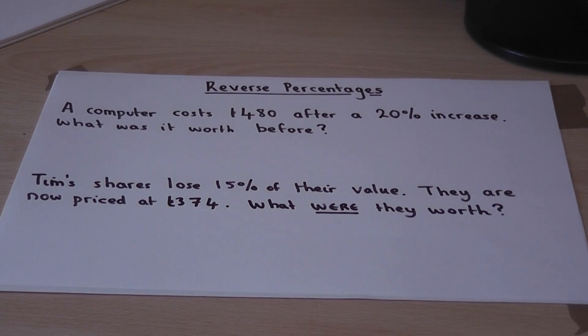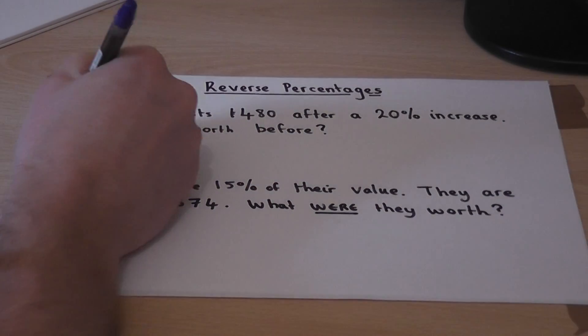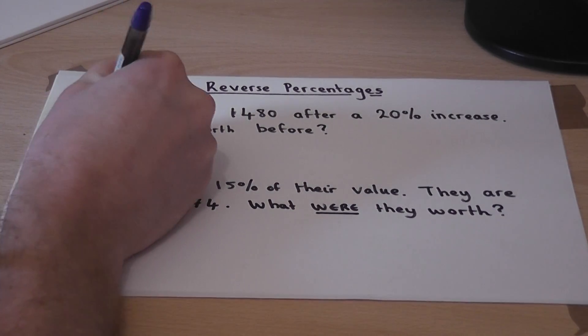We say reverse because we're looking for the original amount before the percentage change. Now we know that in the first case, a 20% increase is equivalent to 1.20.